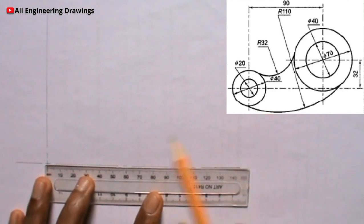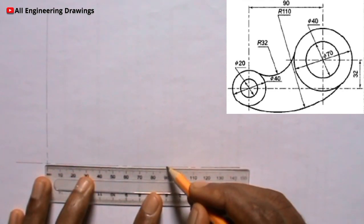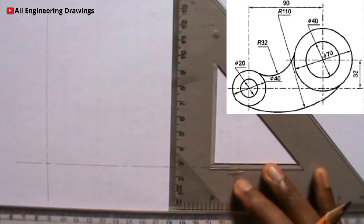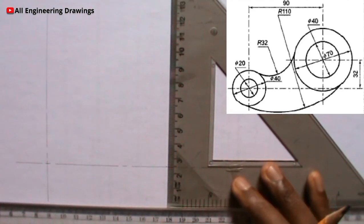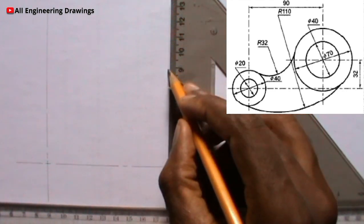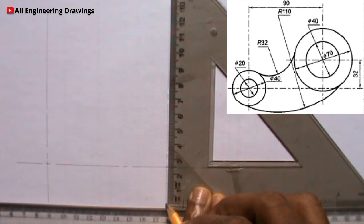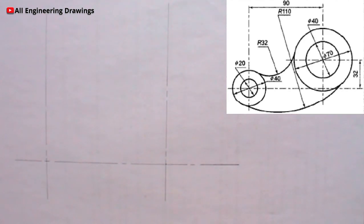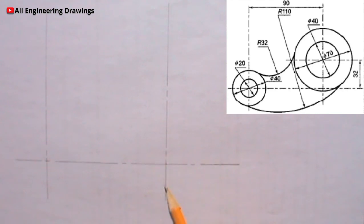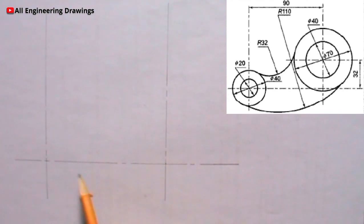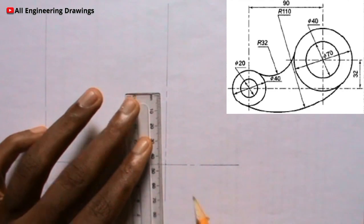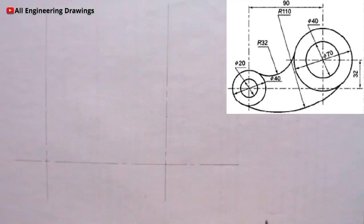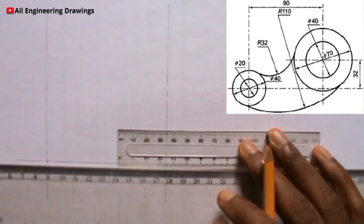You will mark a point 90mm from this line first, then you can now draw the line. From the question you observe that there is a horizontal line that is 32mm from this horizontal line, so I will mark 32mm from this horizontal line, then I can now draw the horizontal line.